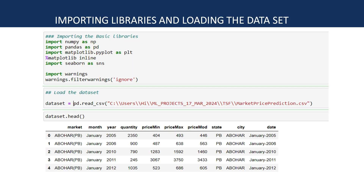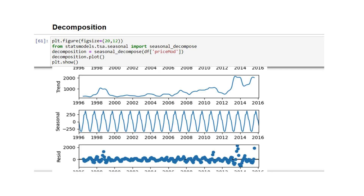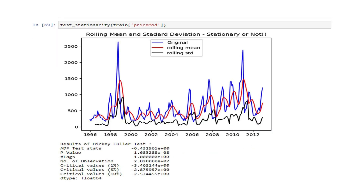Key insights involved in this project include importing the libraries, loading the data, and then performing the Durbin-Watson test for checking autocorrelation. The correlation value between 0 to 4: a value of 2 means no autocorrelation, less than 2 means positive autocorrelation, and more than 2 means negative autocorrelation. We then perform decomposition to understand the seasonality, trend, and residuality of the data, and check stationarity using rolling statistics or the Augmented Dickey-Fuller test.